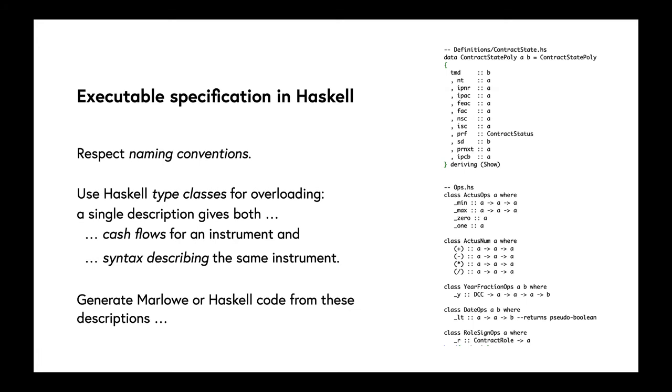Our executable spec says you can execute this and actually see what the outcome of a contract will be, but also you can build syntax that describes it. We use that second aspect to generate Marlowe or Haskell code from these descriptions. So our single description of an ACTUS contract can either be executed directly or turned into a program which can then be executed later on.